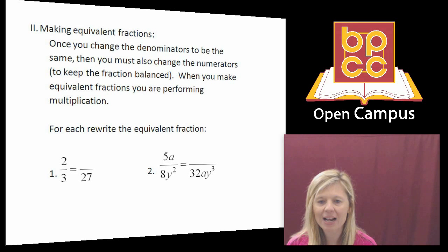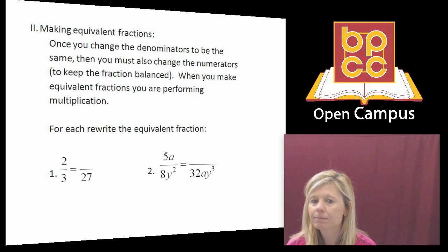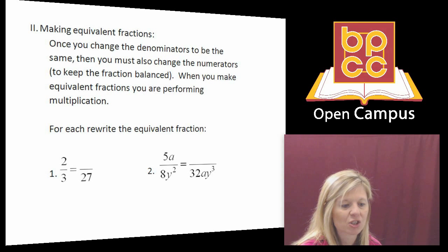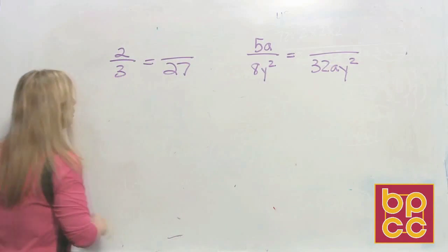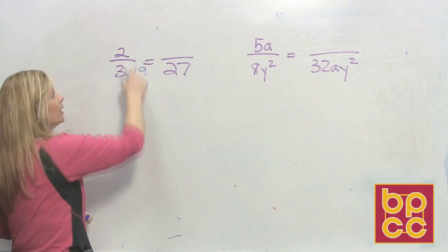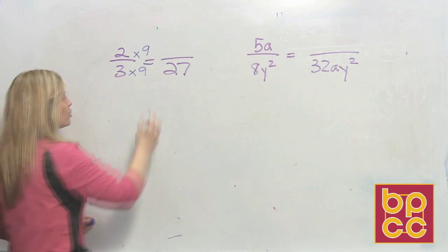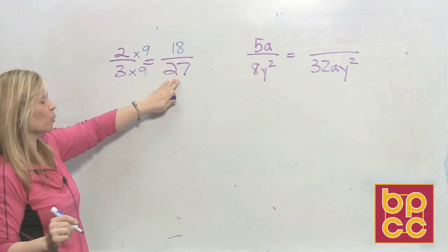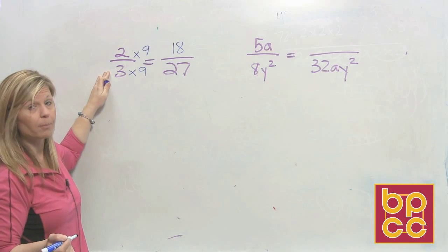Well, if you look at the denominator, how does a three become a twenty-seven? You multiply by nine. Very good. So that means to make equivalent fractions we're going to do multiplication. To make a fraction that is equal to two thirds, you're going to multiply the denominator by nine. If you do the denominator by nine to balance it, you're going to have to multiply the numerator by nine. And two times nine is eighteen. So if I had eighteen out of twenty-seven pieces, that would really mean I have two thirds of the item.